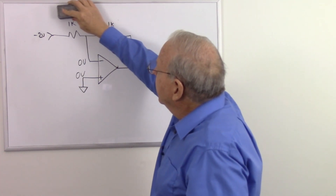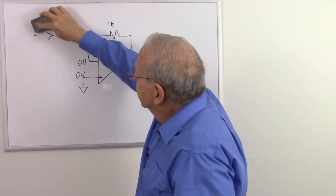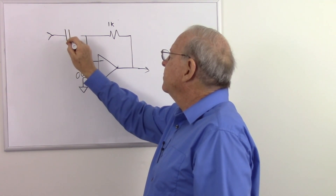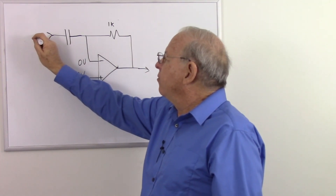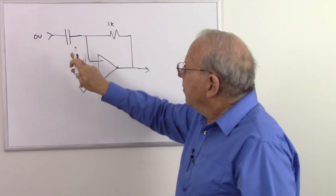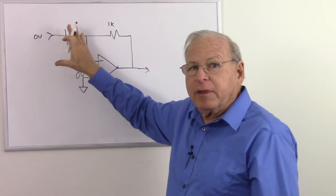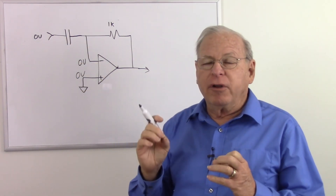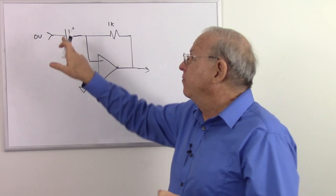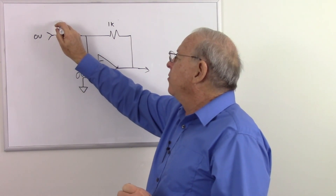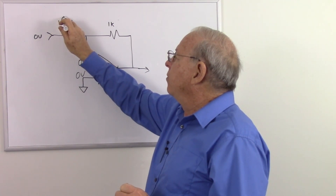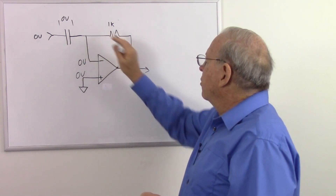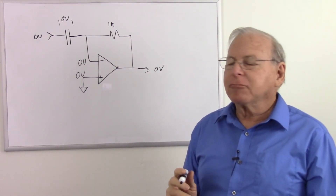Now let's see what happens if we replace the input resistor with a capacitor. Starting with zero volts in, we assume a discharged capacitor — the voltage on both sides is the same, so there's zero volts across it. That equals the summing junction voltage, so everything is zero volts and there's no current flowing anywhere.